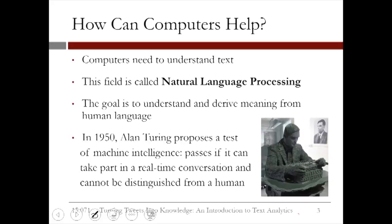How can computers help? The field that addresses how computers understand text is called natural language processing. The goal is to understand and derive meaning from human language. In 1950, Alan Turing, a major computer scientist of the era, proposed the test of machine intelligence — that a computer program passes it if it can take part in a real-time conversation and cannot be distinguished from a human.